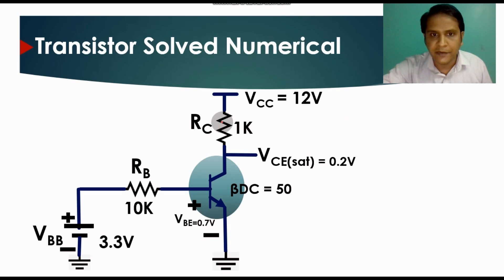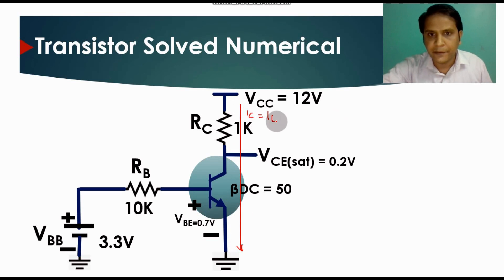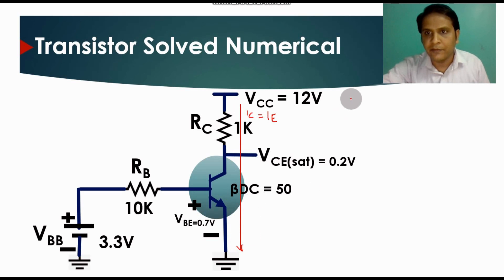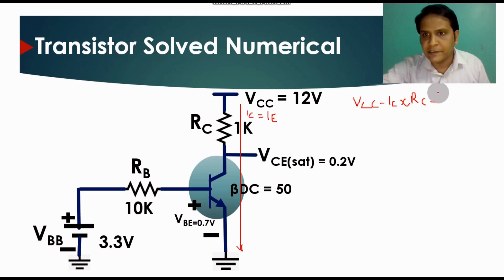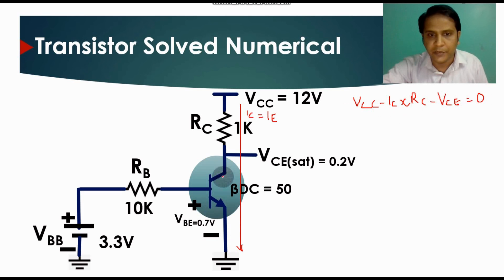First, let the current flowing through the collector loop be IC, which is approximately equal to IE. Applying KVL in the collector loop gives the equation: VCC minus IC times RC minus VCE equals zero.